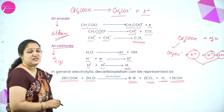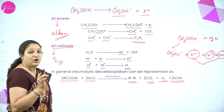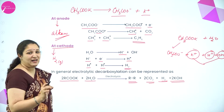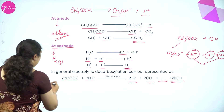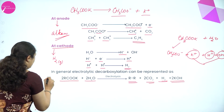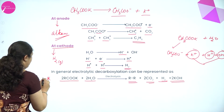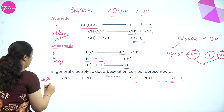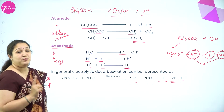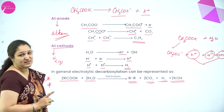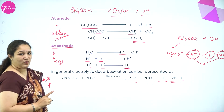The overall reaction: R–COOK with H₂O undergoes electrolysis to give alkanes, carbon dioxide gas, hydrogen gas, and KOH. Learning this equation is very important because it has been asked in previous exams.